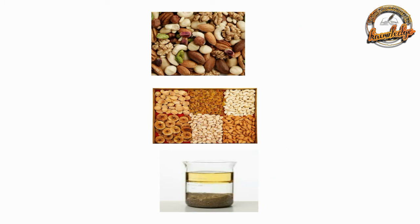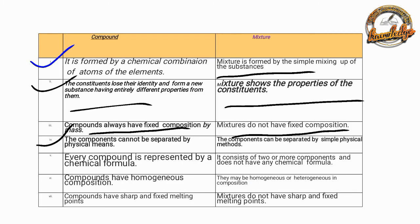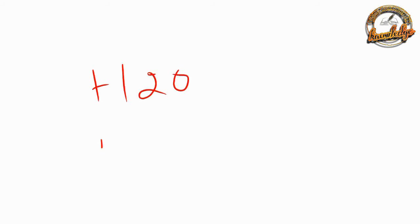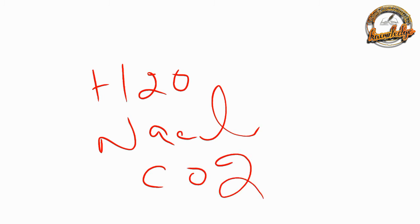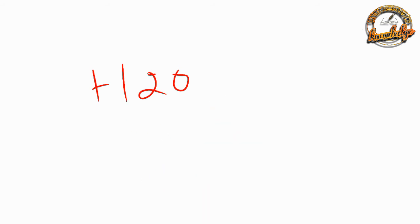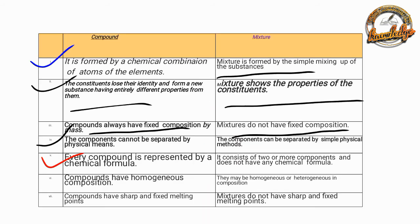Examples of compounds include H2O, NaCl, and carbon dioxide gas. Every compound is represented by a chemical formula. A compound consists of two or more components combined chemically.